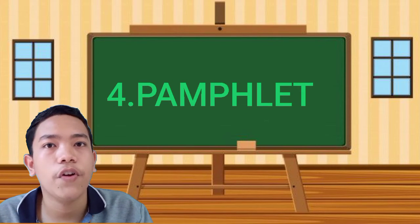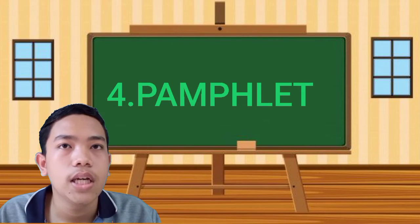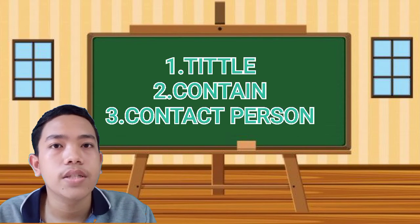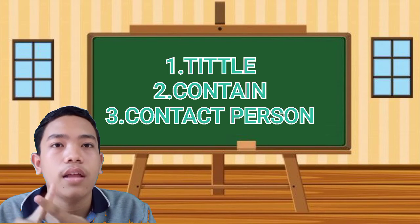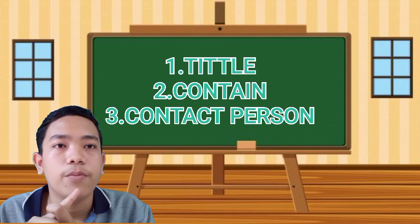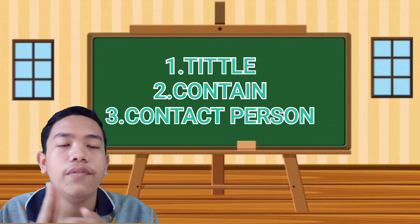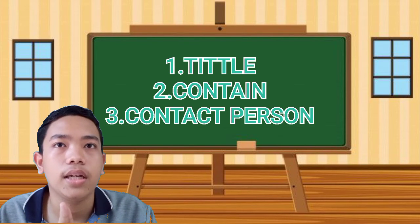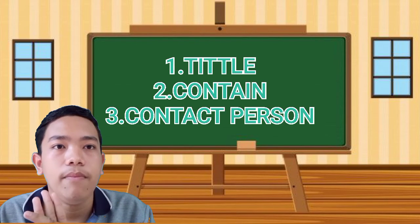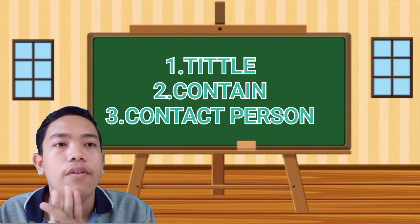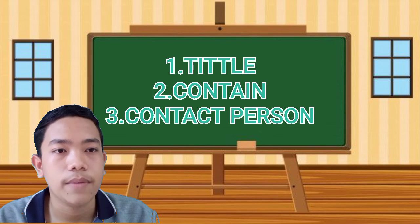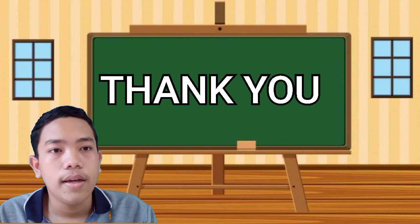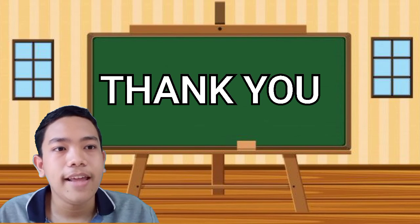And the last is the structure of a pamphlet. The structure of a pamphlet includes: first, the title, which is the name of the product or service; the content, which contains information given about the product; and also the contact person, with name, address, and phone number to find out more information about the product. So, that's all from me. Thank you.